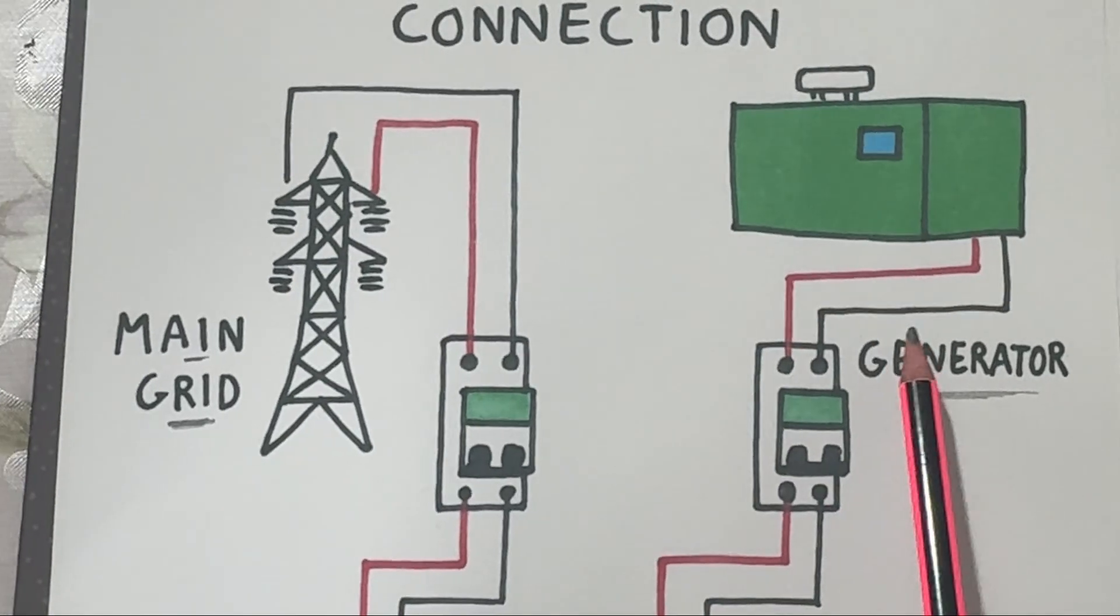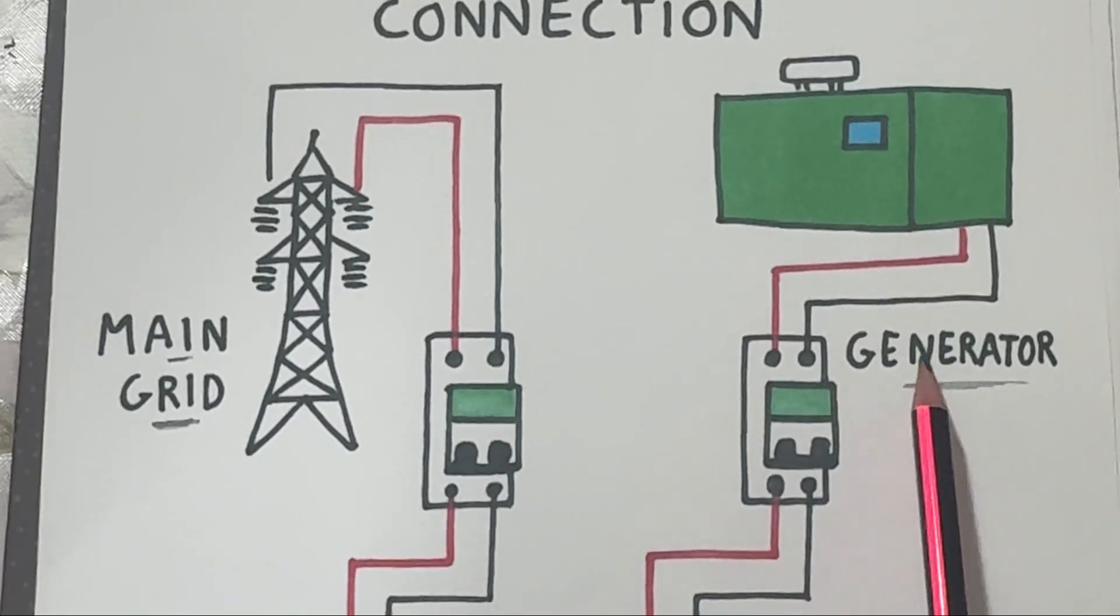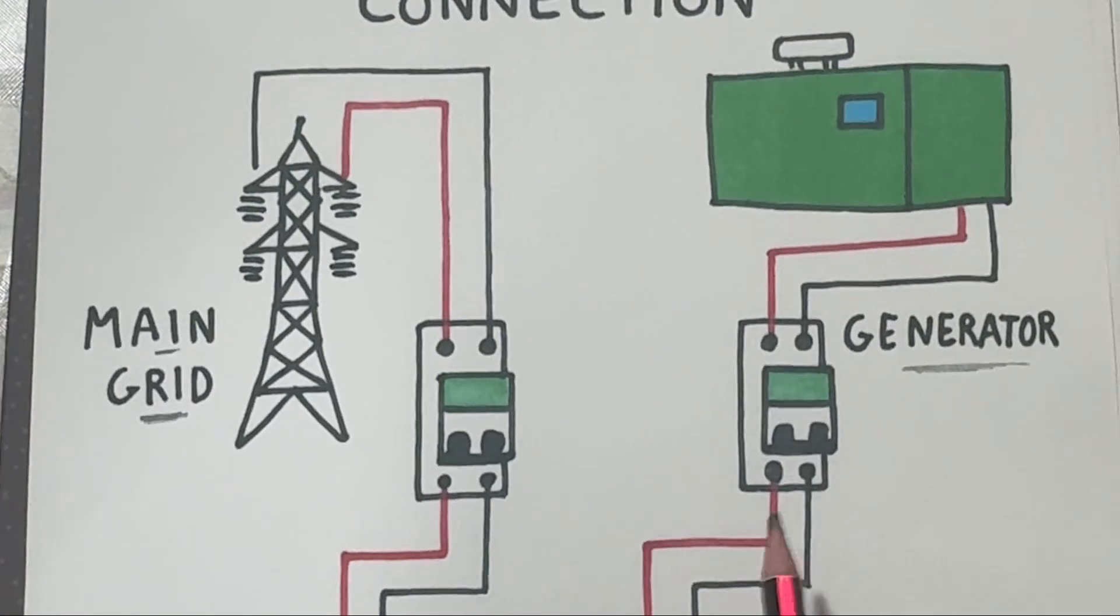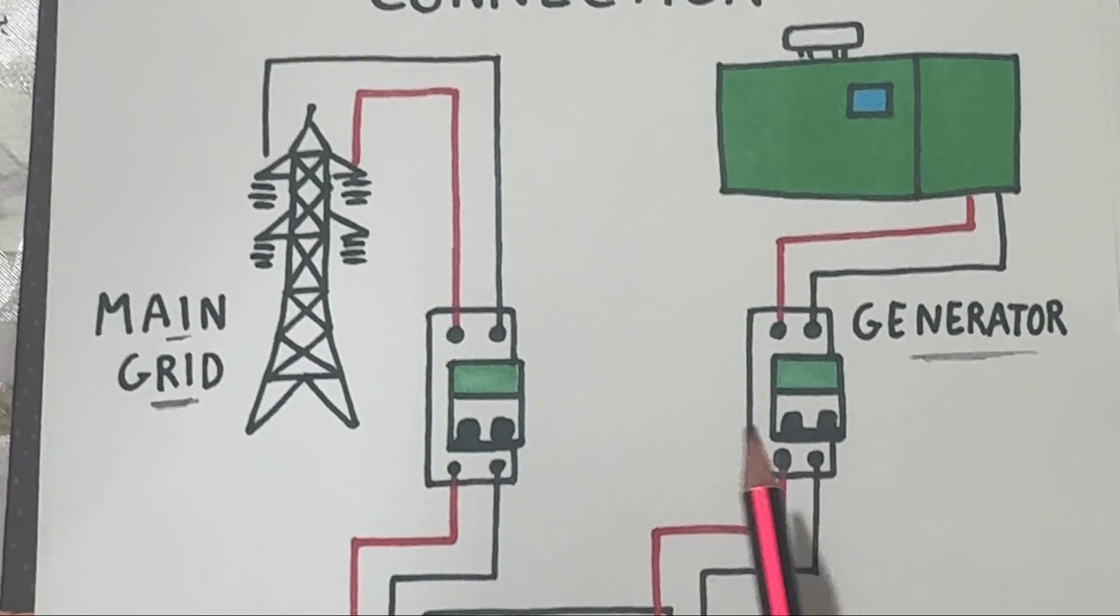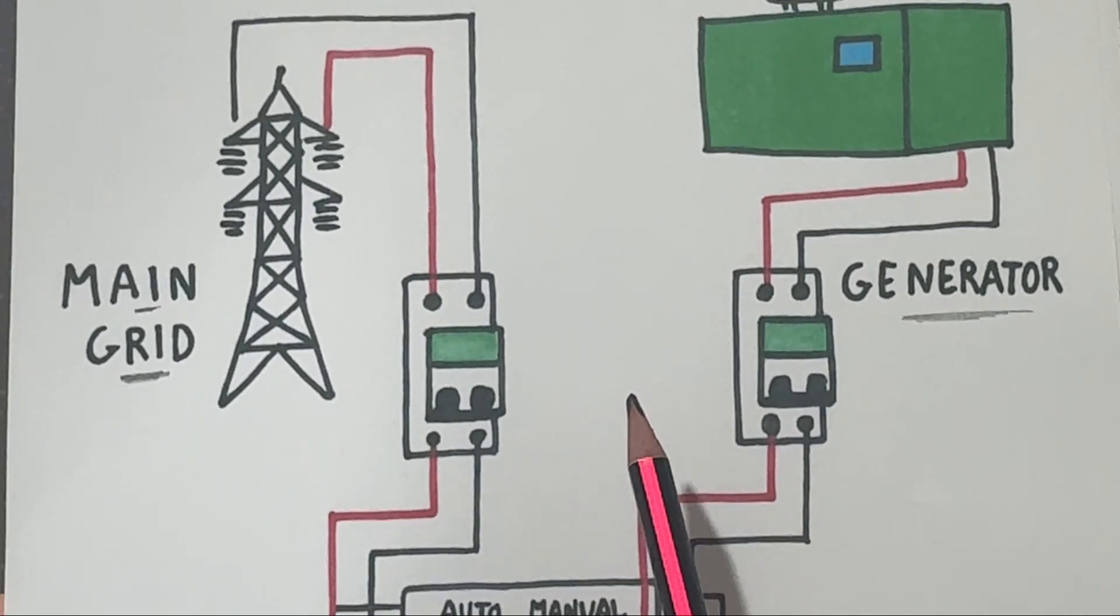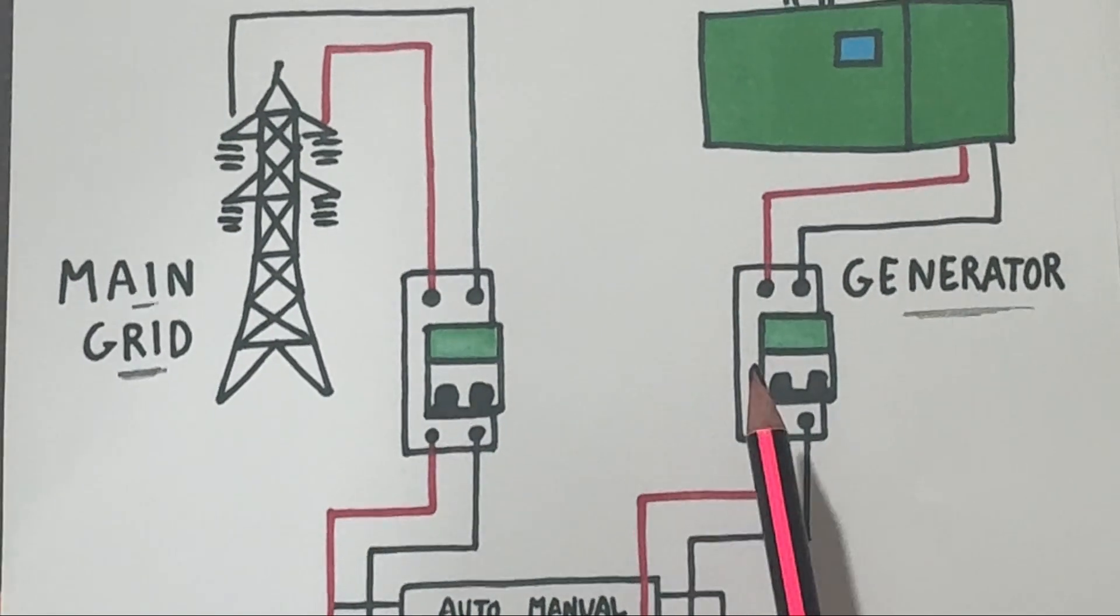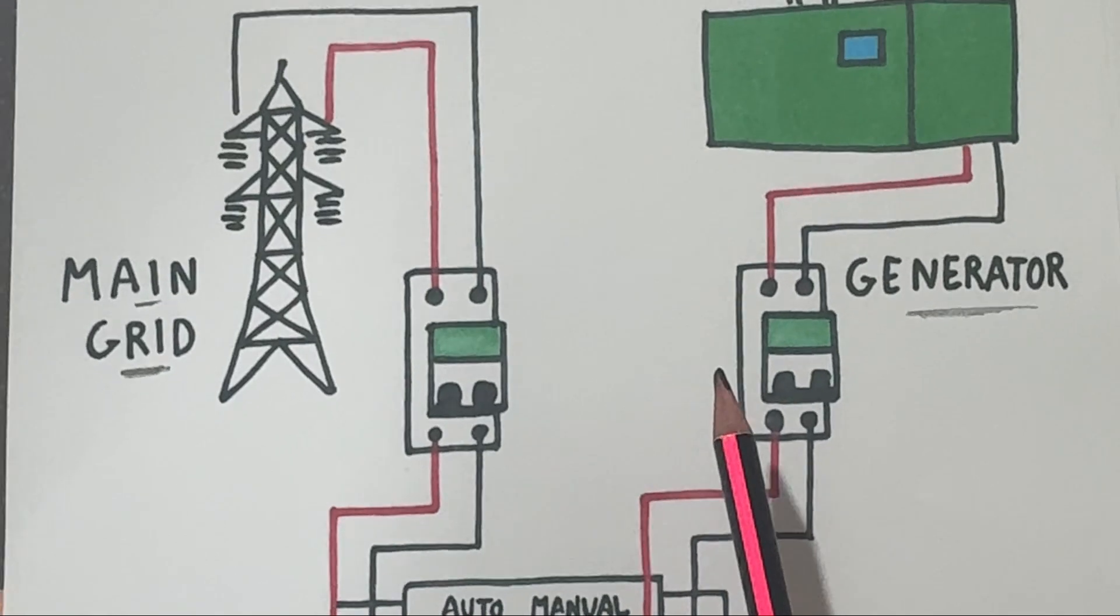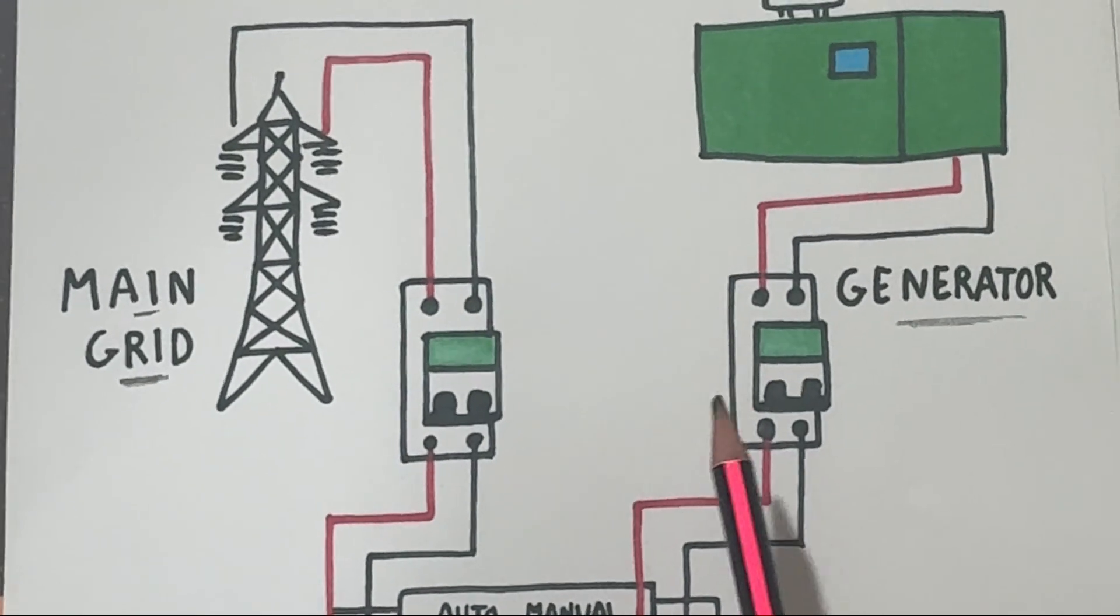Generator connection. On the right side we have the generator. This acts as the backup power source. The generator is also connected through its own MCP which protects it from faults and isolates it during maintenance.